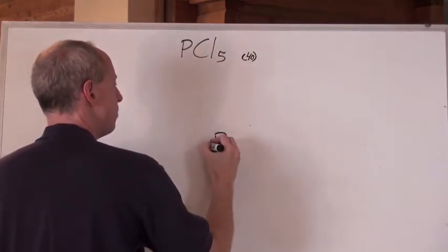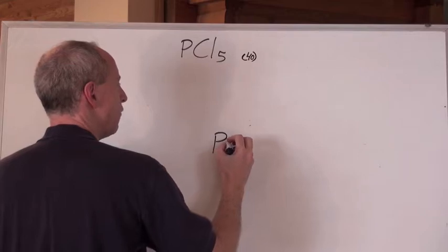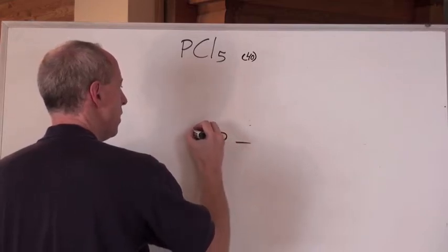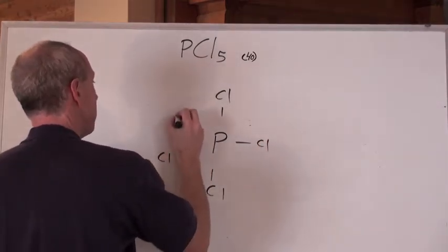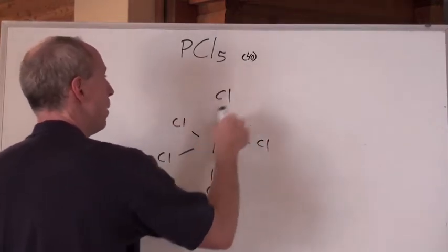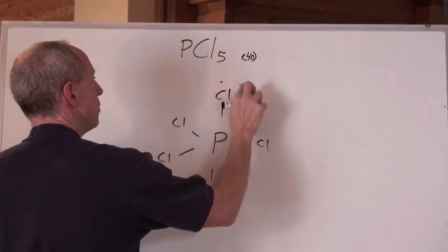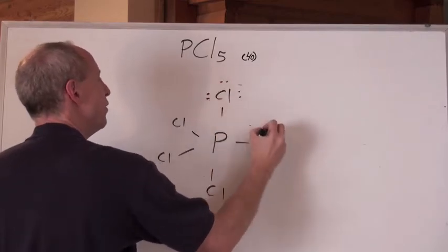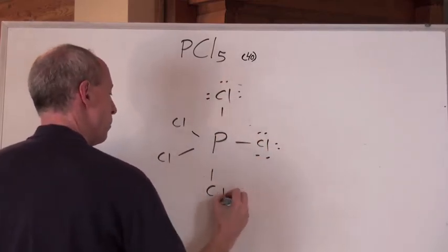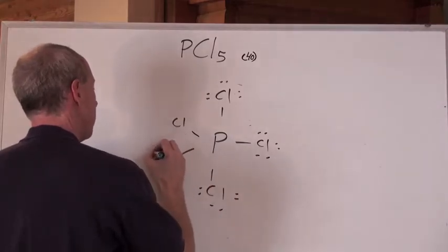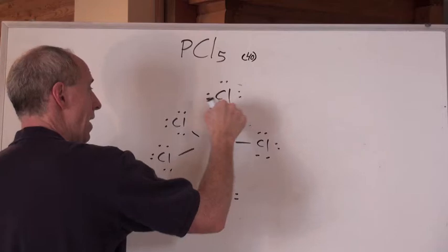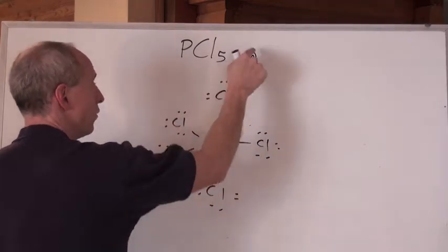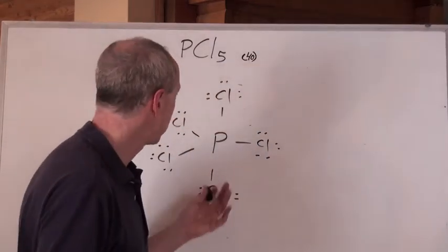So now, it looks like P's in the middle, but then 5 chlorines around it? Wait a minute, if I put 5 things around something, and by the way, then I put lone pairs around here, and if you do this by putting octets right away around the chlorines, that's 8 times 5 is 40, so there it is right there.